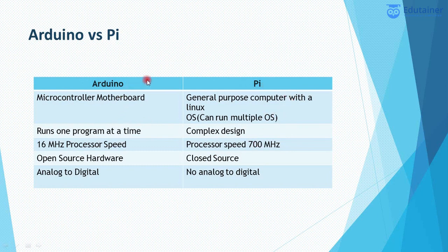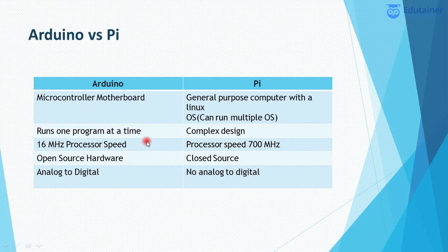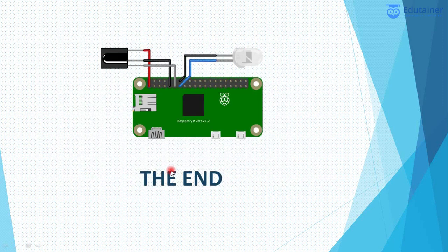This is the general difference between Arduino and Raspberry Pi. Arduino has a microcontroller motherboard while Raspberry Pi has a general-purpose computer with Linux. Arduino runs one program at a time, while Raspberry Pi has a more complex design. Thank you for your time.